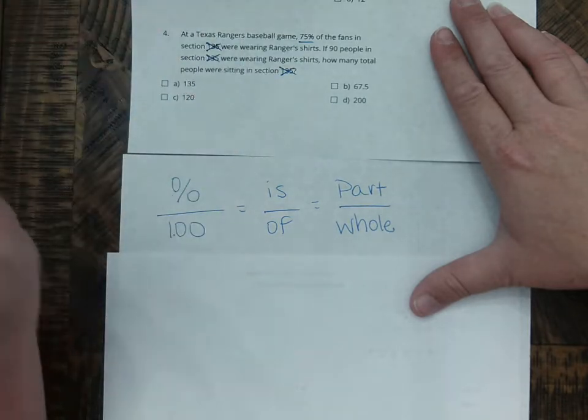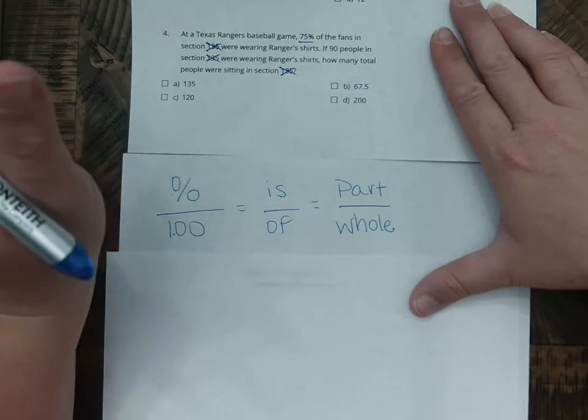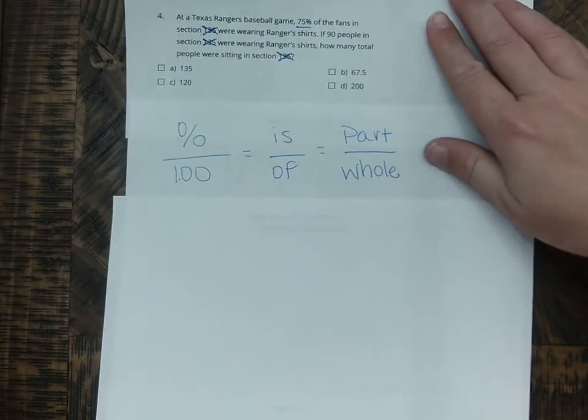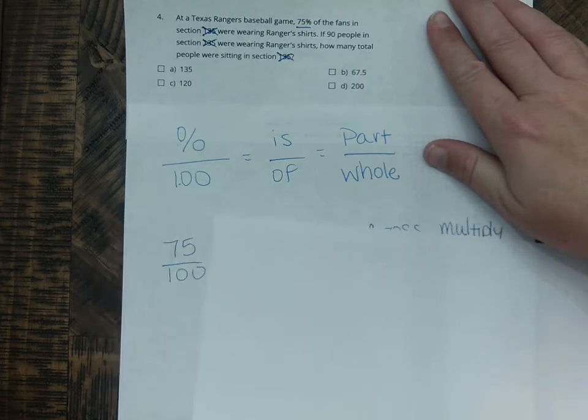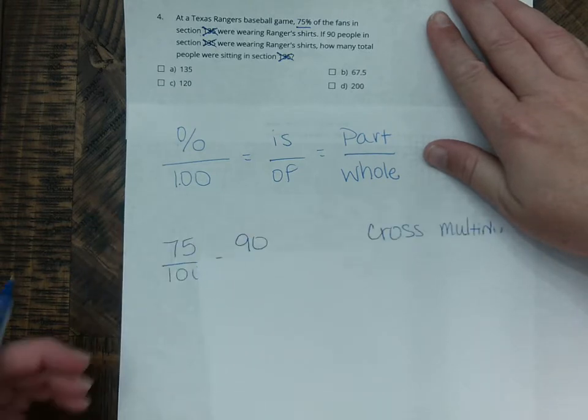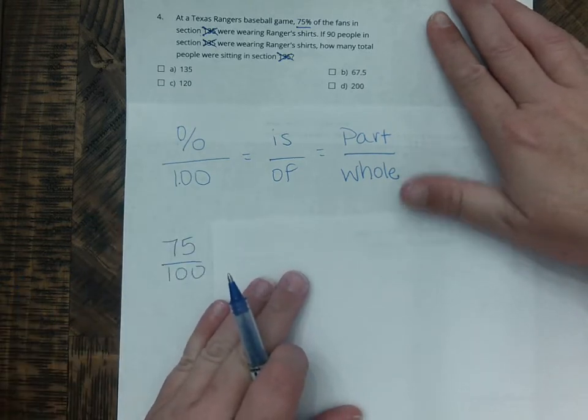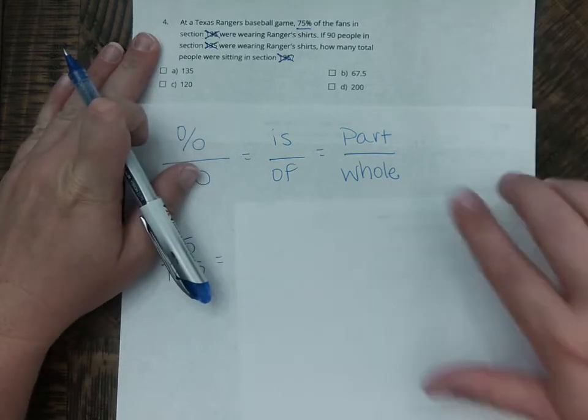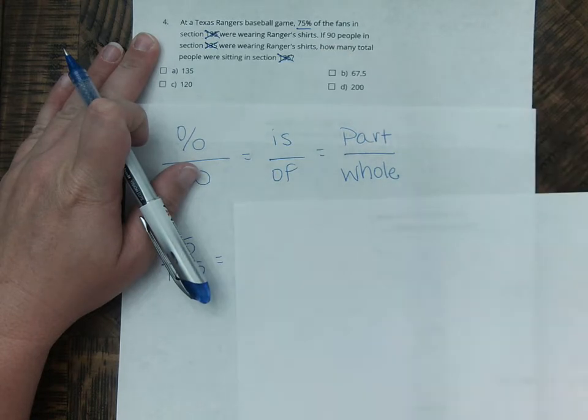So now I'm just talking about in the section, in the seating area that we're talking about. So we're going to say 75%. So 75% automatically goes over 100. So we get 75 over 100 equals, now we have to decide, is 90 my part or my total?